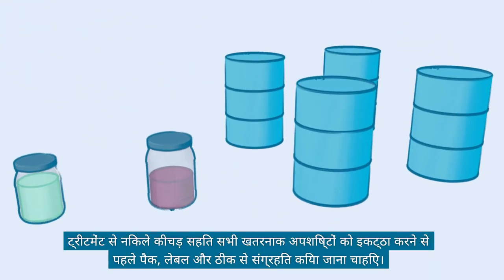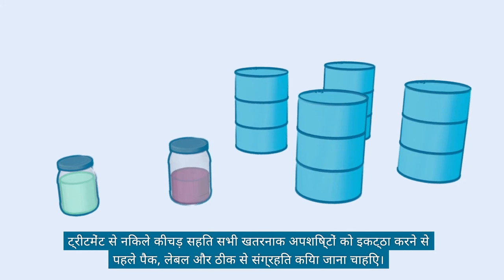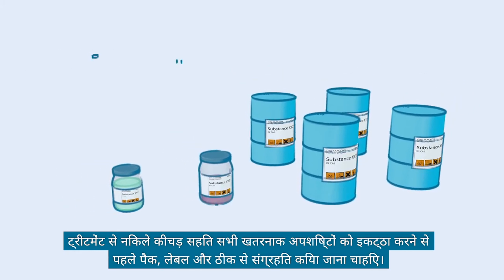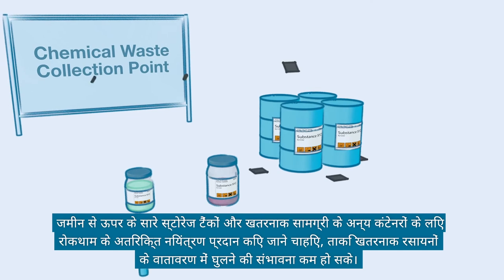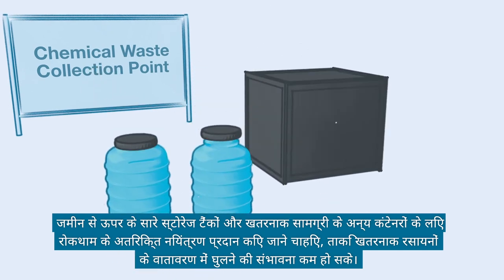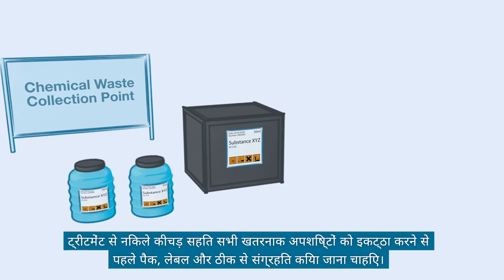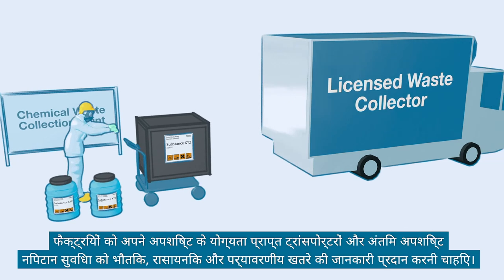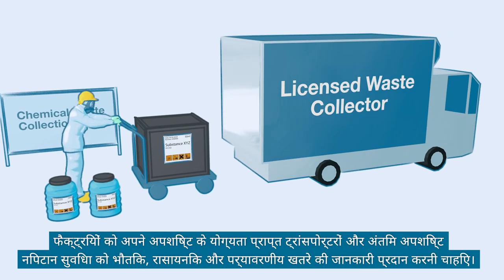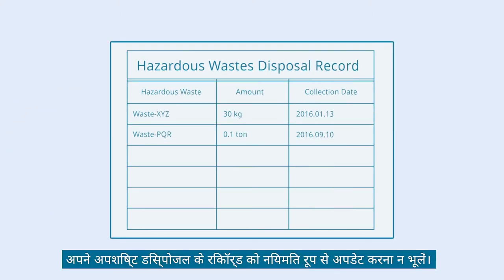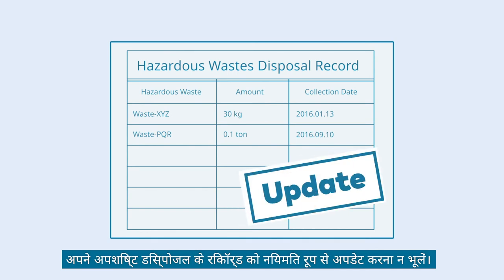All hazardous waste, including the treatment sludge, should be packed, labeled, and stored properly before collection. Secondary containment should be provided for all above-ground storage tanks and other hazardous material containers in order to minimize the chance of hazardous chemicals leaching into the environment. Be sure to use licensed waste collectors for hazardous waste. Factories must provide physical, chemical, and environmental hazard information to their qualified waste transporters and the final waste disposal facility. Do not forget to regularly update your waste disposal records.